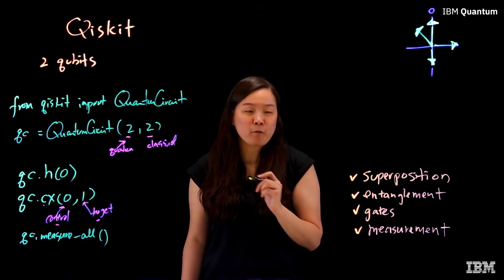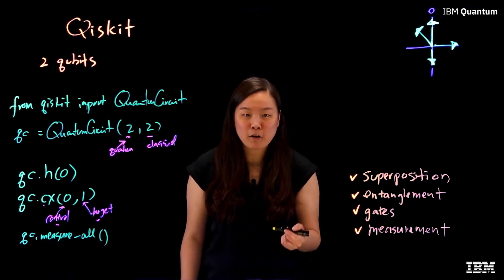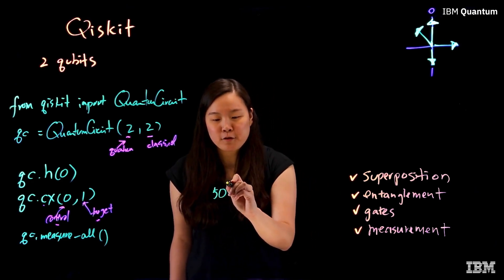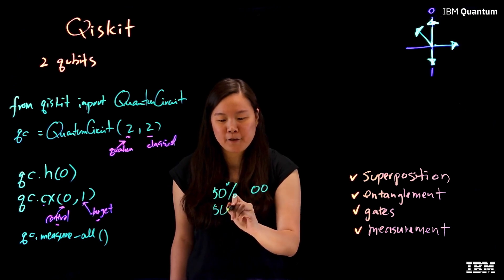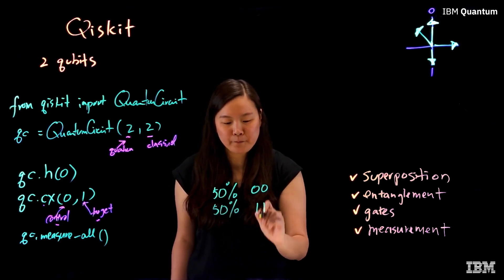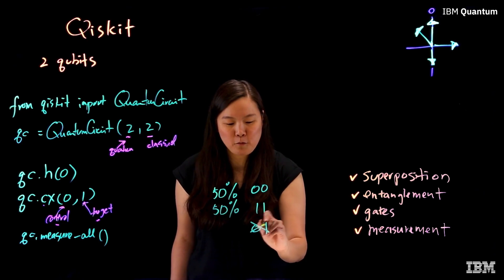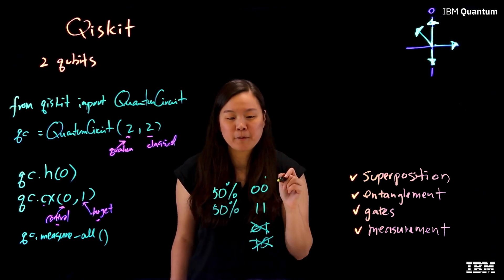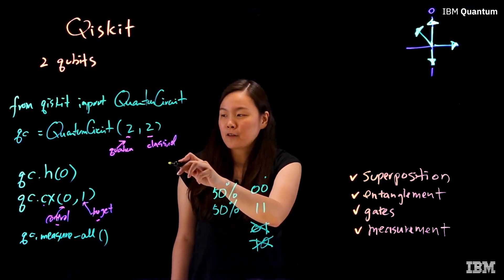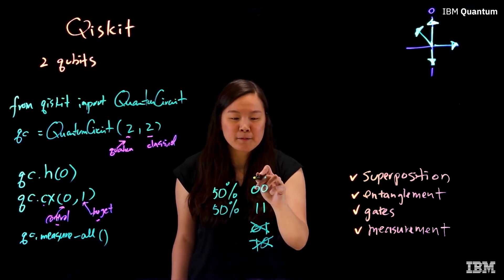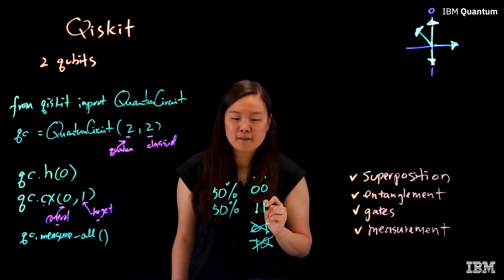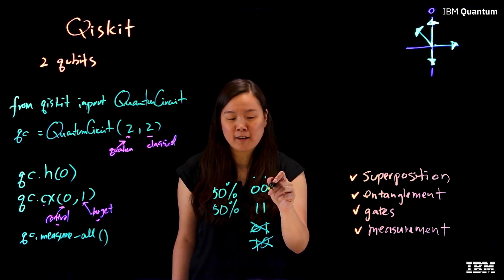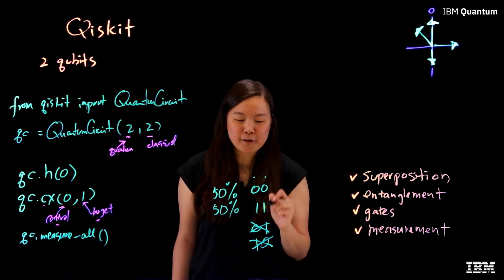Now, if you take this program and run it a bunch of times on an ideal quantum computer, you'll find out that there is a 50% chance of the outputs being 00 and 50% chance of it being 11. But it would never be a 01 or 10. The 50-50 of the first qubits comes from the superposition. And while we didn't explicitly change the state of the second qubit, it got changed anyway because it is entangled with the first qubit. So it changes with the first qubit.